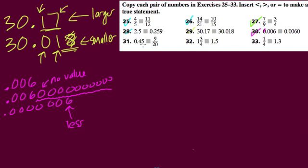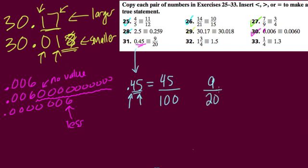0.45 or 9 twentieths. Here's a fun one to compare because I can change 0.45 into what? Well, this is 45. This is 4 tenths and 5 hundredths. So it's equal to 45 hundredths. It's 45 out of 100. And I like using 100, especially when 9 twentieths can also be written out of 100.